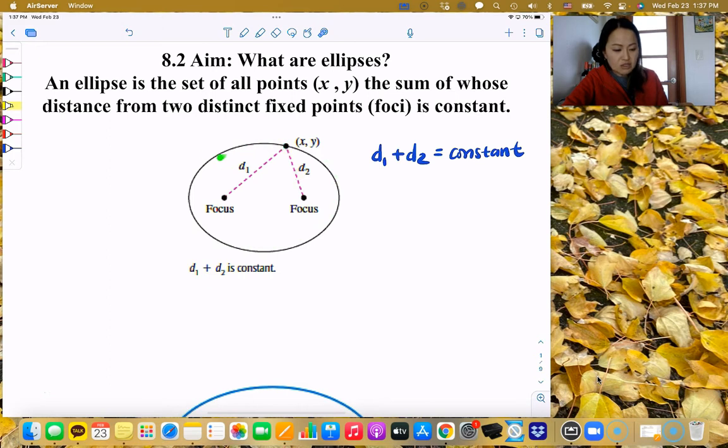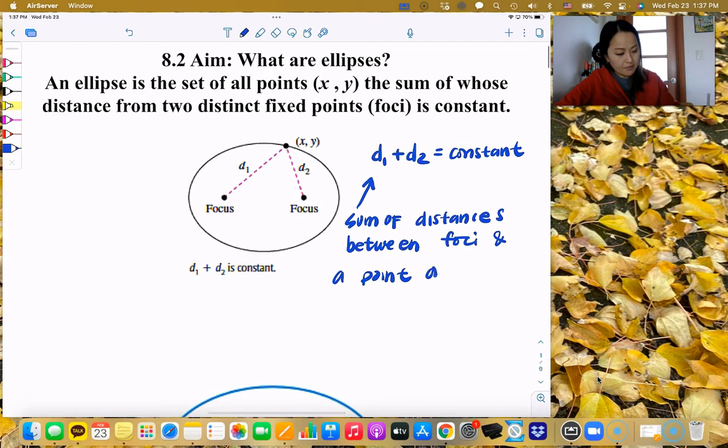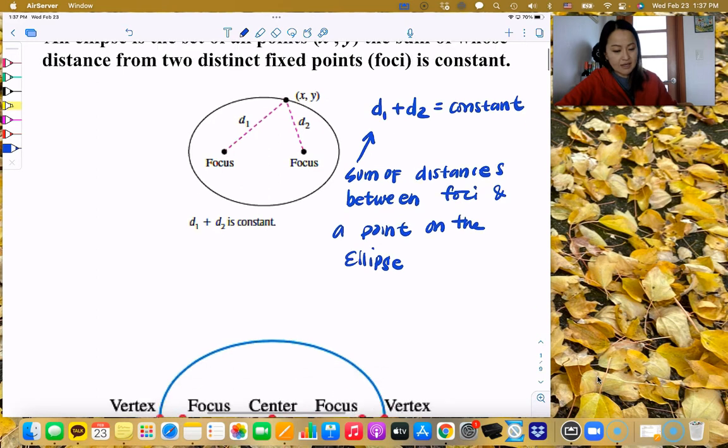So I want you to imagine this like here too. That means the d1 and d2 are on top of each other. I wonder what that means. Let's see what else. Okay, so again, when we put this into words, that would be the sum of distance between foci and a point on the ellipse is fixed.